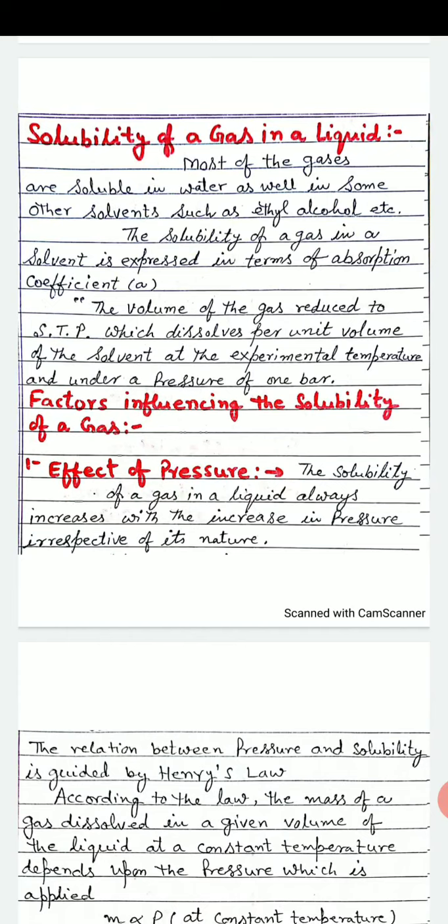The solubility of a gas in a solvent is expressed in terms of absorption coefficient (small a). The volume of the gas reduced to STP which dissolves per unit volume of the solvent at the experimental temperature and under a pressure of 1 bar.